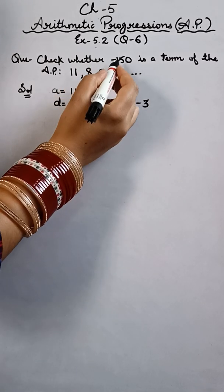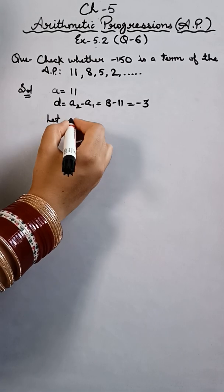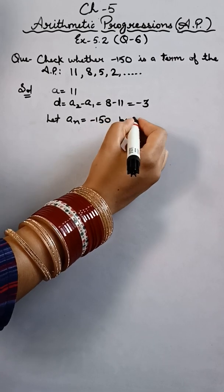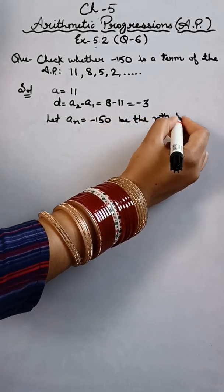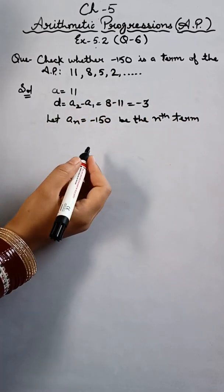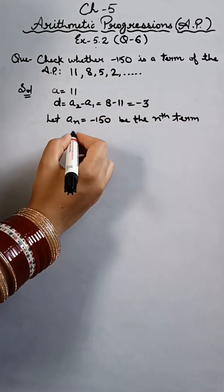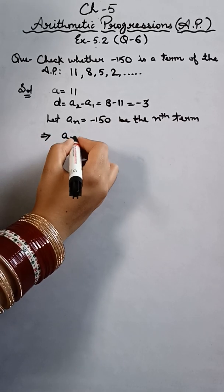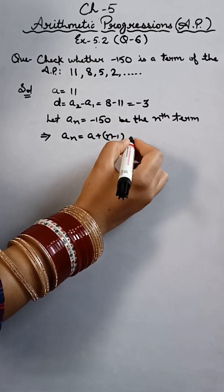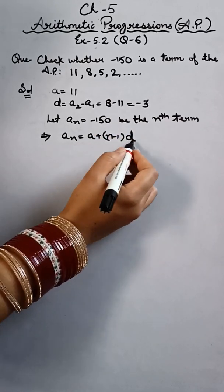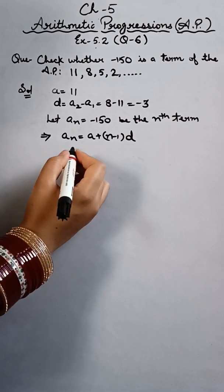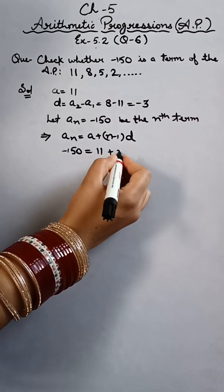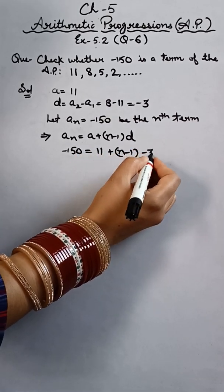So let's assume, we don't know if it's a term or not. Let Aₙ equals minus 150 be the nth term of the given AP. We need to find the number of terms. So which implies Aₙ equals A plus (n minus 1) times d. We have Aₙ, A, and d. So like the previous question, Aₙ is minus 150, A is 11, and d is minus 3.